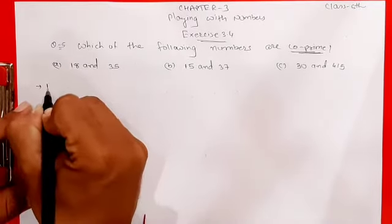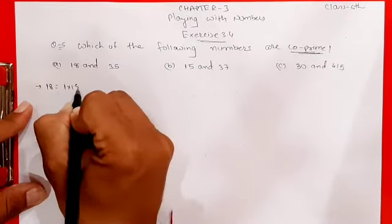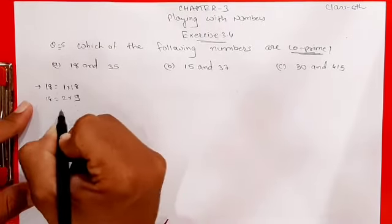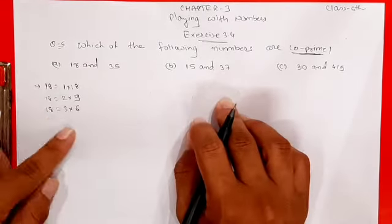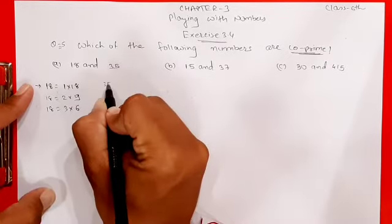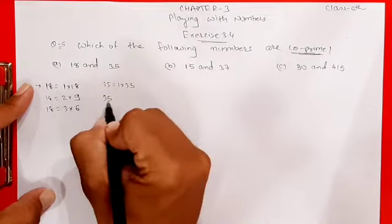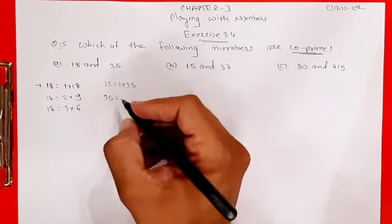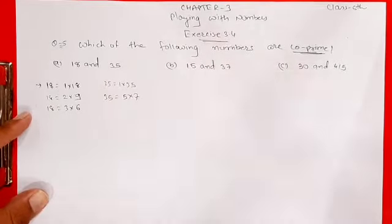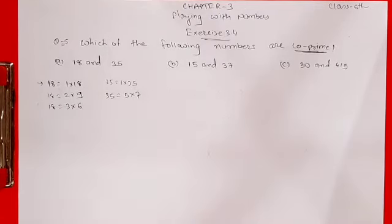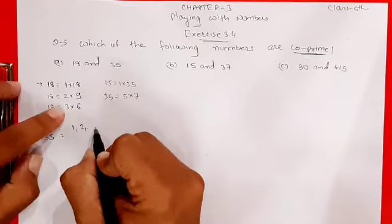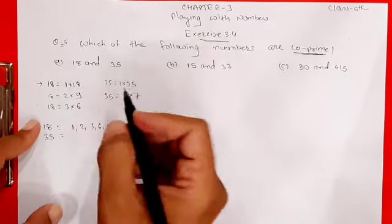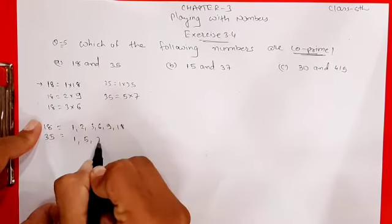Let's find factors of 18 first. Factors of 18: 1×18, 2×9, 3×6 — and 4 does not divide 18, 5 does not, 6×3 is a repeat, so we stop. Factors of 35: 1×35, 2 does not divide, 3 does not, 4 does not, 5×7=35, 6 does not, 7×5 is a repeat. So factors of 18 are 1, 2, 3, 6, 9, 18 and factors of 35 are 1, 5, 7, 35.